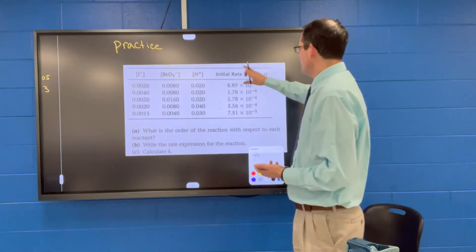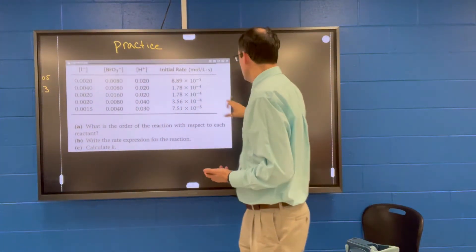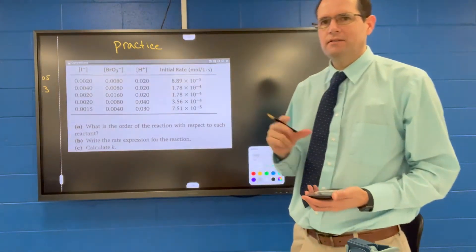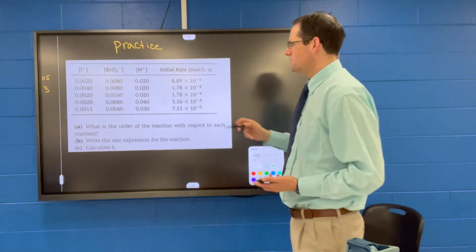Okay here's this practice problem. We want to find two experiments that have everything constant except one of the reactants.